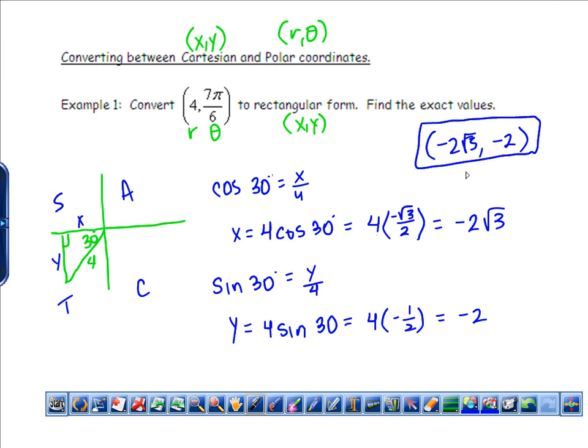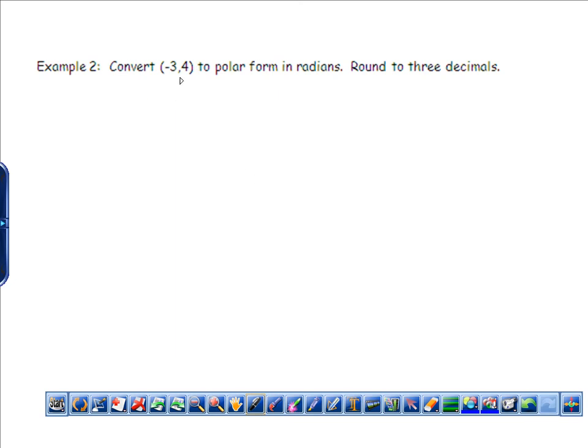And you can use your calculator to check on this as well. Okay, now let's go the other way. Let's convert this xy, which is rectangular or Cartesian, to the polar form. So this time I'm wanting to find the r and the theta. And it says to round to 3 decimals. So this tells me I'm going to need to use my calculator. So go ahead and get your calculator out. I'm going to start it the same way. I'm going to make a graph. And this one is going to be in the second quadrant. It's going to be -3 and 4.